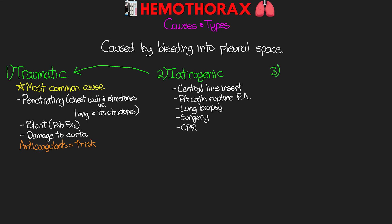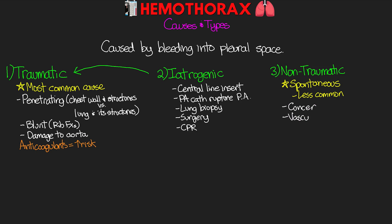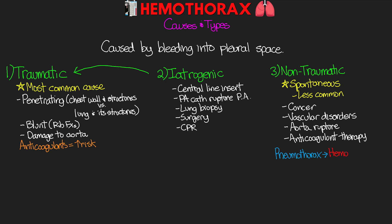The final type is our non-traumatic or spontaneous hemothorax, which is a less common cause. Potential causes considered non-traumatic or spontaneous include cancer, vascular disorders including rupture of the aorta, anticoagulant therapy, and some pneumothoraces can also lead to hemothorax. This combination is something we refer to as a pneumohemothorax.